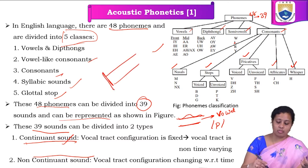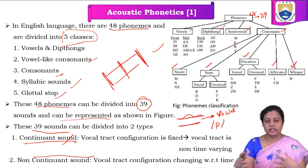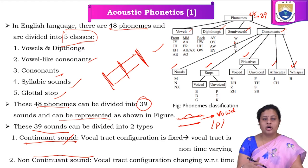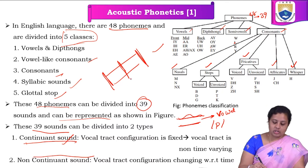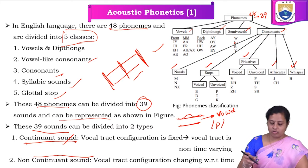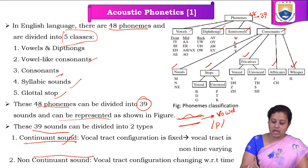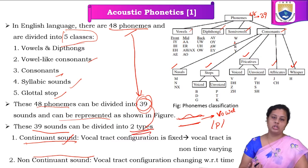The vocal tract changes at the starting point, middle point, and end point - these are three different points where we can see whether the vocal tract is changing or not. This is a very important parameter when we are trying to model the vocal tract. For some specific sounds, the vocal tract is changing with respect to time, and for some sounds it is not changing with time. This is an important classification in acoustic phonetics.